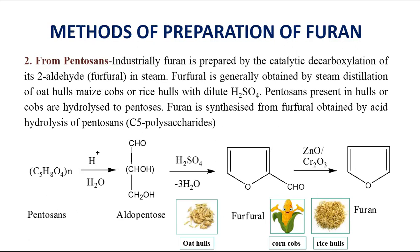The second method for synthesis of furan is from pentosans. Industrially, furan is prepared by catalytic decarboxylation of furfural in steam. Furfural is generally obtained by steam distillation of oat hulls, maize cobs, or rice hulls with dilute H₂SO₄. These pentosans present in hulls or cobs are hydrolyzed to pentose; the pentosans are converted to aldopentose on treatment with acid (H₂SO₄), further forming furfural, which is then hydrolyzed to get furan.